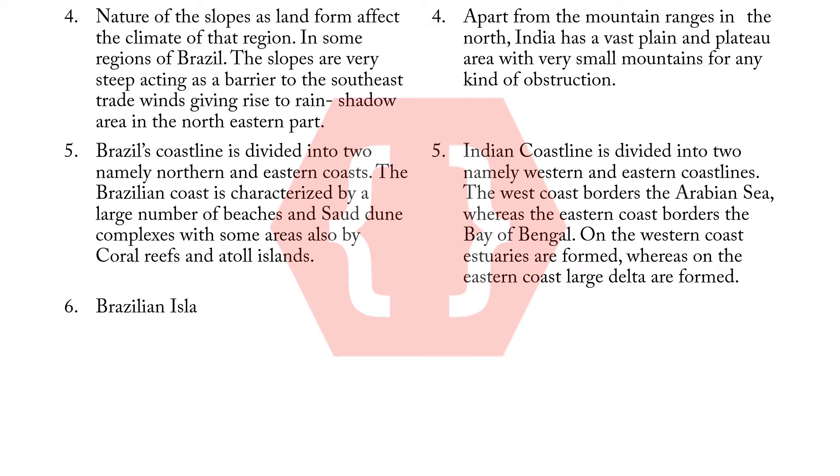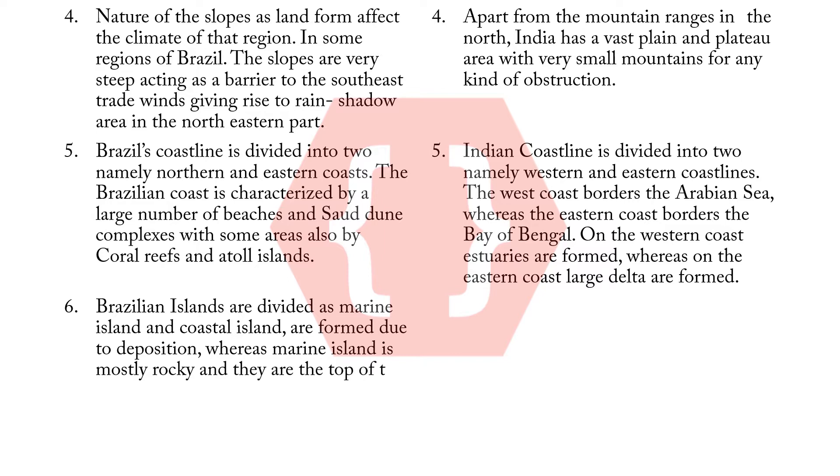6. Brazilian islands are divided as marine island and coastal island, formed due to deposition. Marine islands are mostly rocky and they are the top of the submerged mountains. There are also some coral islands and they are called atolls.